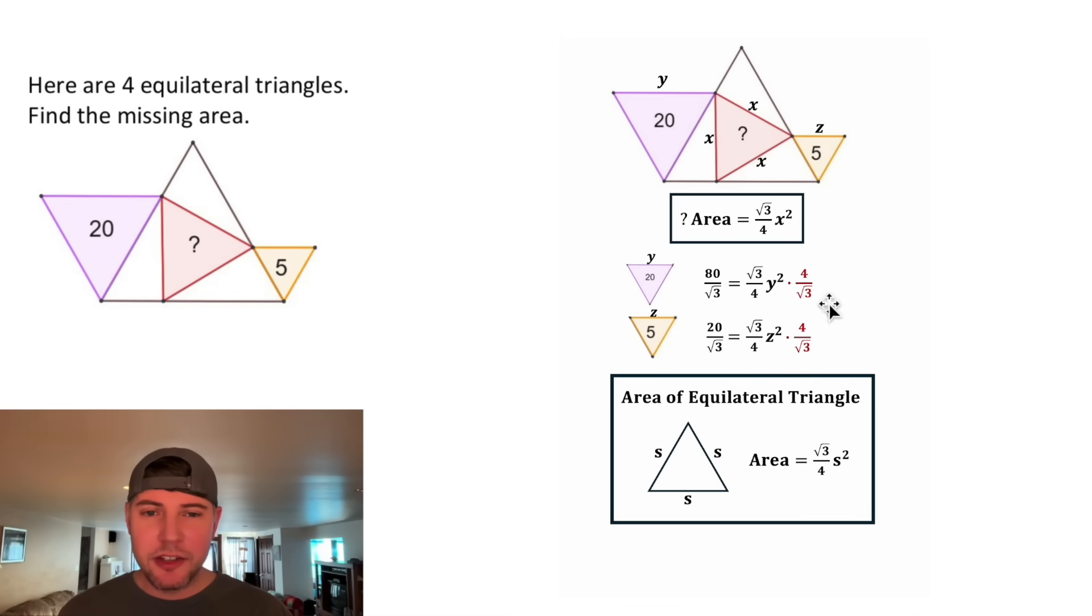On the right-hand side, these two fractions will cancel each other out. And now we have y squared is equal to this, or z squared is equal to this.